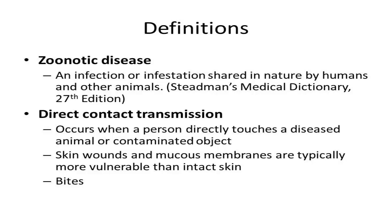Transmission by direct contact requires that an organism that can cause disease, such as a virus, a bacteria, or a fungus, is in the environment or within or on an infected animal. A person becomes exposed when the organism directly touches a person's open wounds, eyes, nose, mouth, or skin, which can happen if someone has direct contact with a diseased animal's body fluids, like blood or saliva, or tissues such as skin.